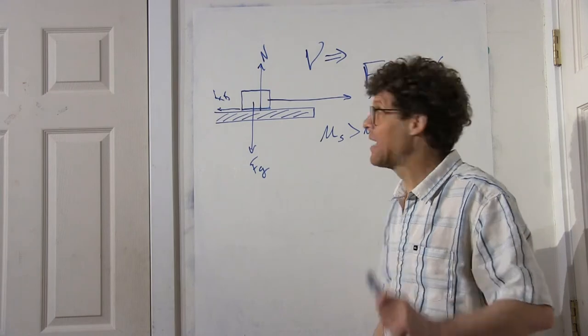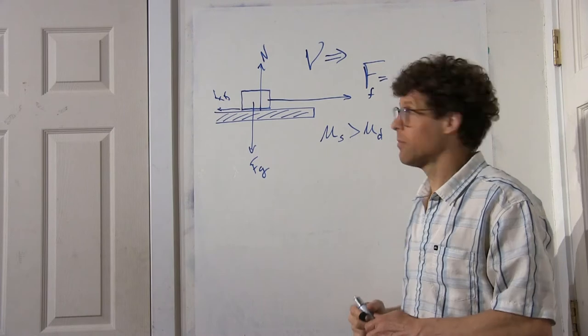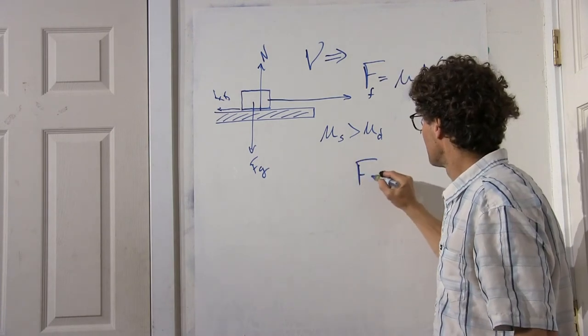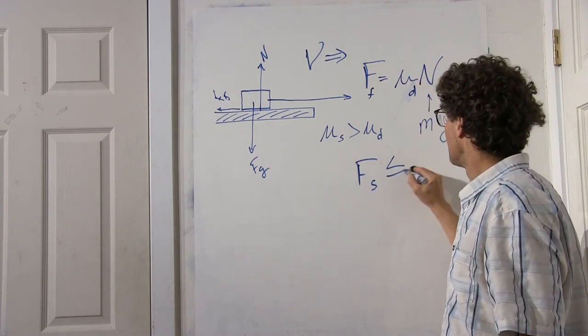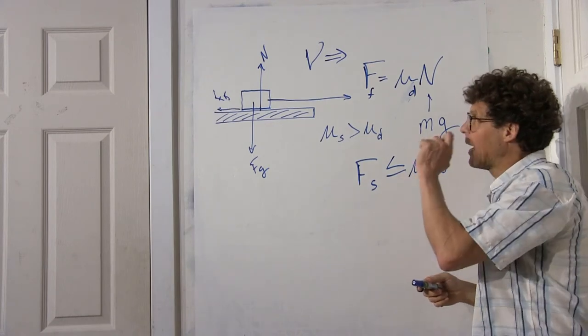One more thing. This function is always true only for dynamic friction. For static friction, you have to say this. Why is that?